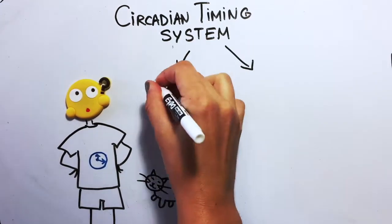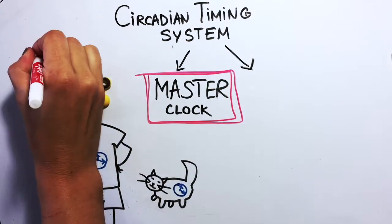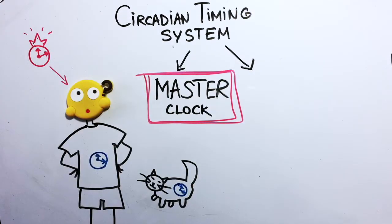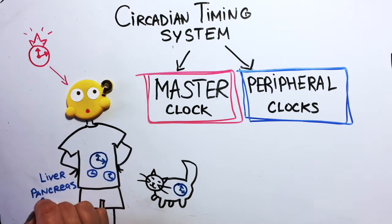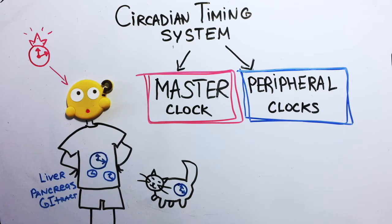In humans and other mammals, this system includes the master clock located in the hypothalamus and many other clocks located in peripheral tissues: the liver, pancreas, gastrointestinal tract, just to name a few.